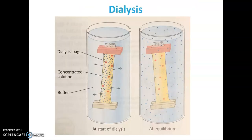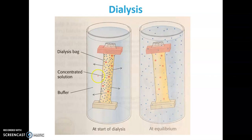Now we have dialysis. This is a dialysis bag, and this is a beaker or cylinder that contains the buffer. The dialysis bag contains the protein and a salt — the concentrated solution may be a salt, a sugar, or any small molecule. The dialysis bag is porous, allowing smaller molecular weights to leave the bag into the solution, while higher molecular weight proteins remain in the bag. We use it to separate the protein from a ligand or from a solution.